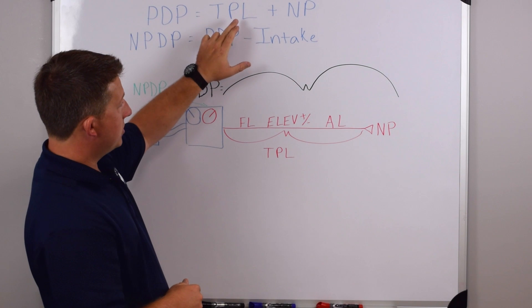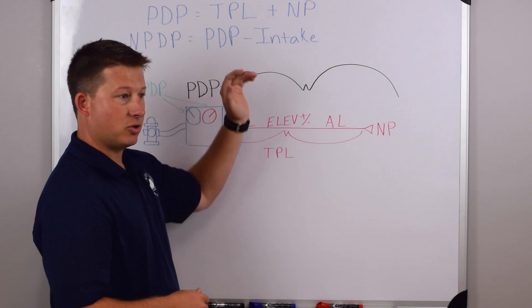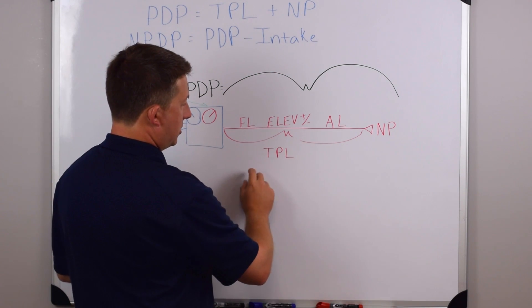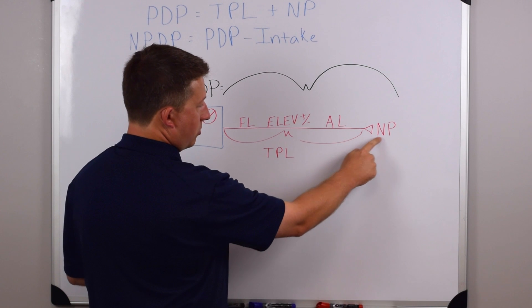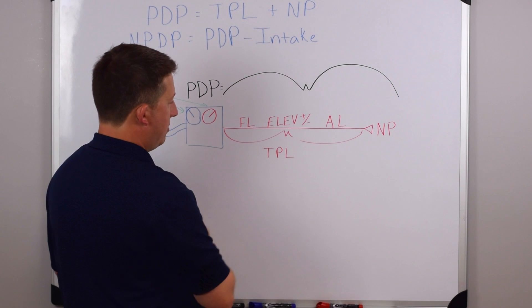Pump discharge pressure equals TPL plus NP. That's the total pressure lost plus the nozzle pressure. When we look at the diagram, total pressure lost plus the nozzle pressure, which is what our nozzle needs to operate at, all of these things added together are going to equal PDP.